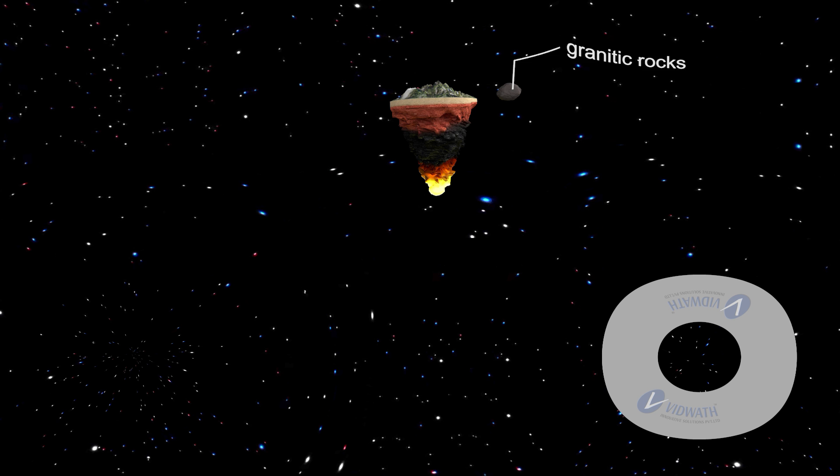Or granitic rocks, igneous, which are acidic in nature. The lower layer of the crust consists of basaltic and ultra-basic rocks. The continents are composed of lighter silicates or silica plus aluminium, also called sial, while the oceans have the heavier silicates or silica plus magnesium, also called sima.